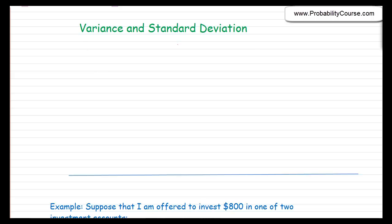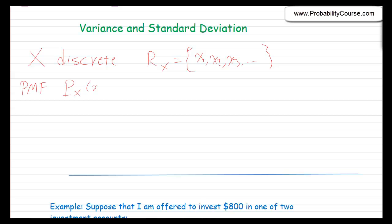In this video, we talk about variance and standard deviation. So far we have discussed discrete random variables. If x is a discrete random variable, we can list all possible values of x — x1, x2, x3, and so on. The probability that x equals each of them is given by the probability mass function, or PMF: p_x(x_k) is the probability that x equals x_k.